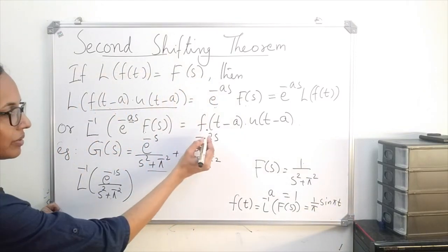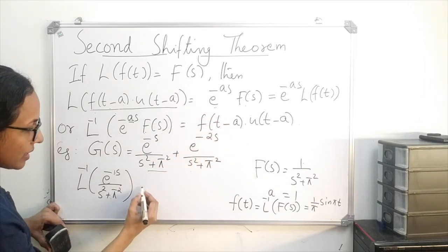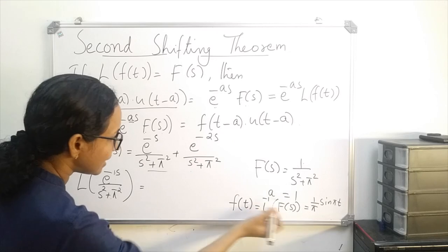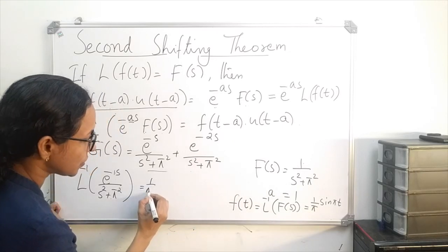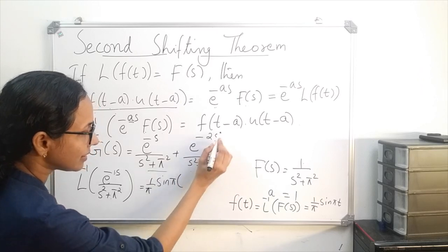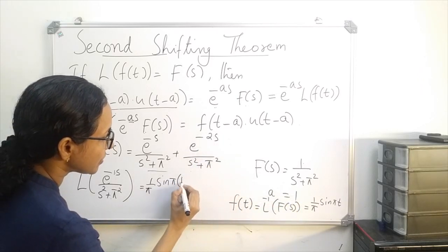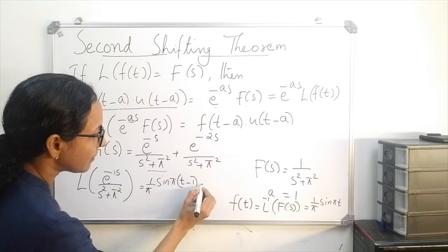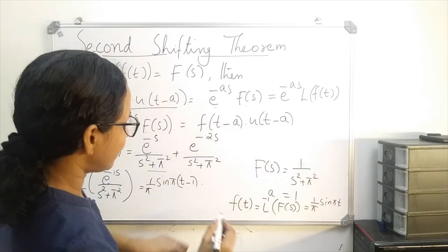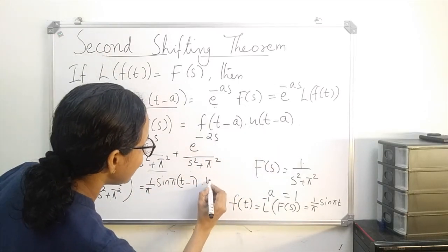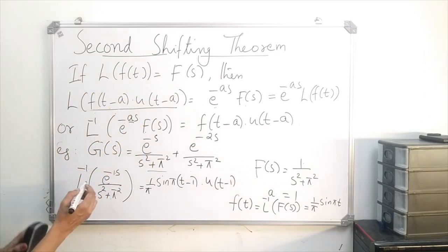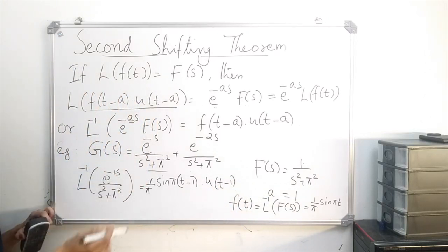Now directly apply the formula. f of t minus a, that is 1 over pi times sin of pi times t minus 1, since a equals 1, multiplied by u of t minus 1. So the value of the inverse of the first term is 1 over pi times sin pi(t minus 1) times u of t minus 1.